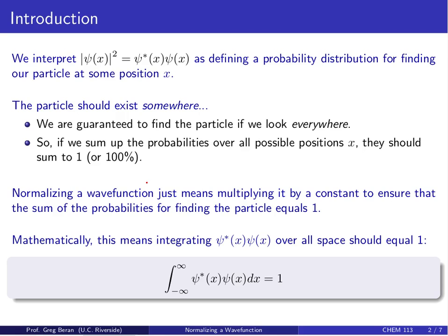Normalizing a wave function just means multiplying it by a constant to ensure that the sum of those probabilities for finding the particle equals 1. Mathematically this means integrating ψ*(x)ψ(x) over all space, and when we do so, we ought to obtain 1.